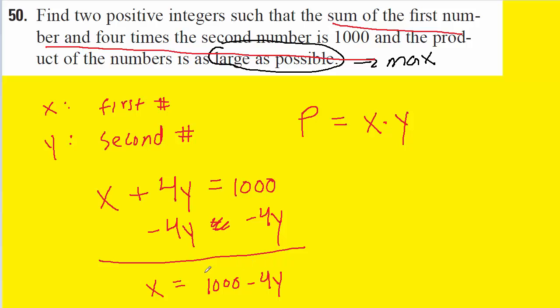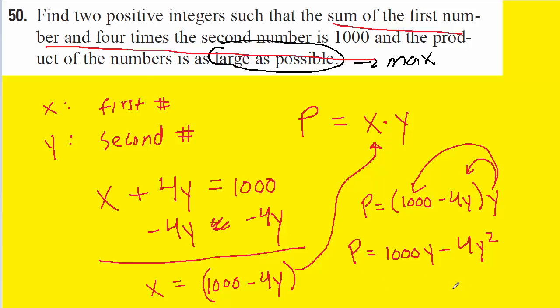Now that we have this expression for x, we can substitute that into our objective equation. Then we distribute the y into the parentheses, which leaves us with an equation with just one variable: p equals 1000y minus 4y squared. Now that we have the simplified objective equation, we can seek to maximize it.